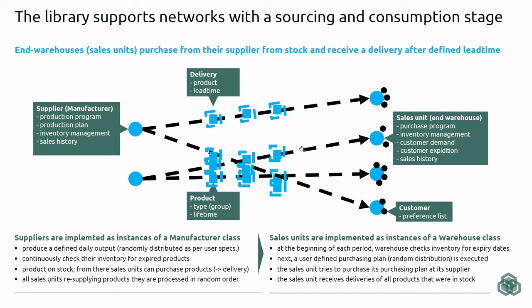The default inventory logic in this library is first in first out. So the products produced first on stock will also be the first ones to be shipped. Likewise, at the sales unit the oldest products are the ones consumed when a customer purchases. Throughout the supply chain there is a first in first out principle.